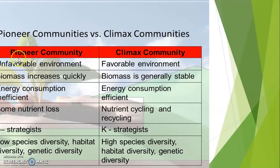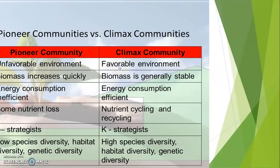Talking about productivity: in pioneer community, total productivity will be less, while in climax community, total productivity will be more — so there is an increasing trend from pioneer to climax. Productivity per respiration will be more in pioneer community because they are respiring less relative to productivity; this follows a decreasing trend. Productivity per biomass will also follow a decreasing trend, because in pioneer community biomass is low but productivity is high. Net Primary Productivity, or NPP, will be more in pioneer and less in climax. Nutrient cycling is open in pioneer and closed in climax. Species richness follows an increasing trend as we go from pioneer to climax.